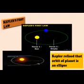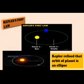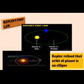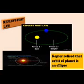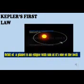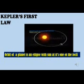Let us study Kepler's first law of planetary motion. Kepler realized that orbits of planets are elliptical. An ellipse is a geometric figure having two foci. Kepler's first law states that all planets move around the sun in elliptical orbits with the sun at one of the foci.